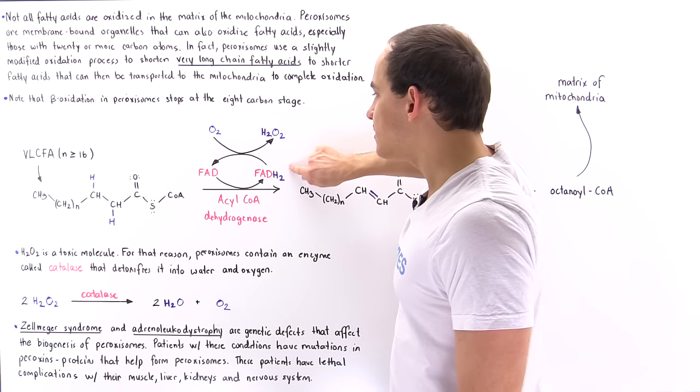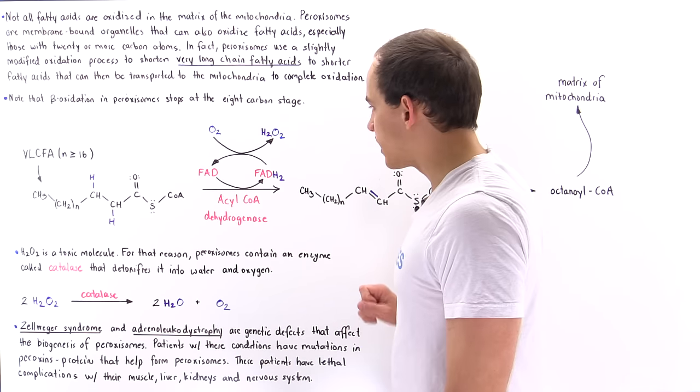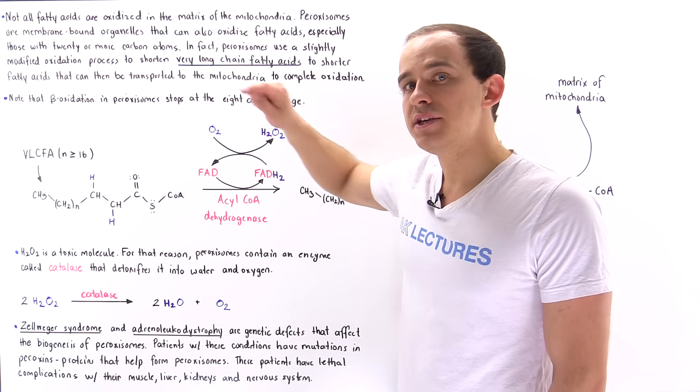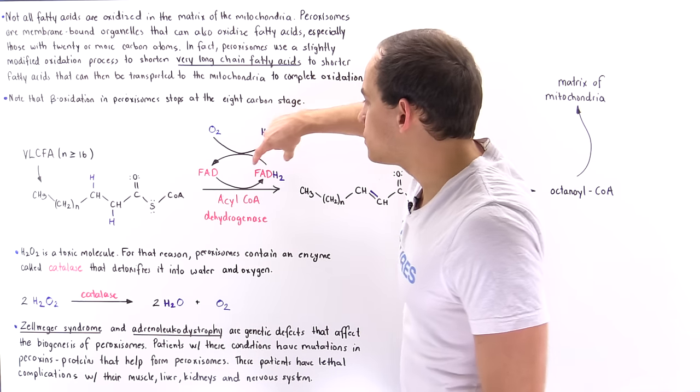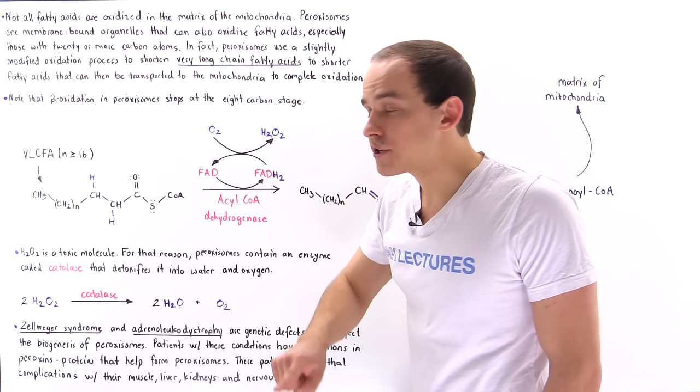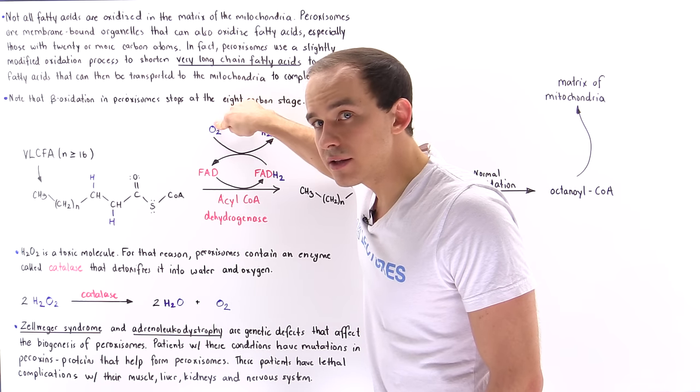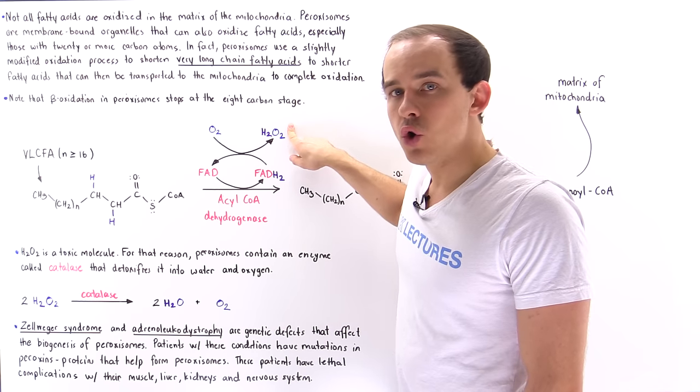Now this process doesn't stop here. Remember that in the matrix of the mitochondria, we generate that FADH2 molecule that can be used by the electron transport chain, but in the peroxisome, those electrons are then transferred onto an oxygen molecule. And that oxygen molecule is used to form an H2O2 molecule, hydrogen peroxide.